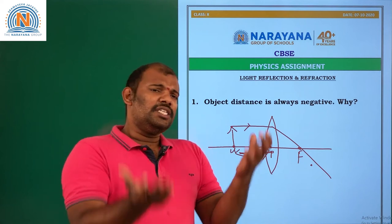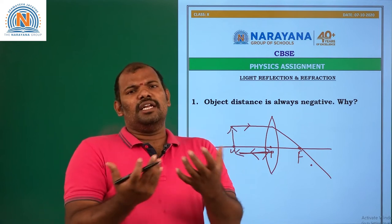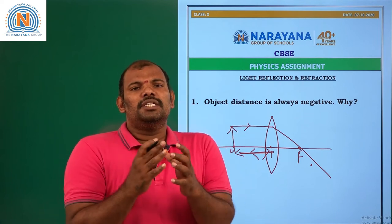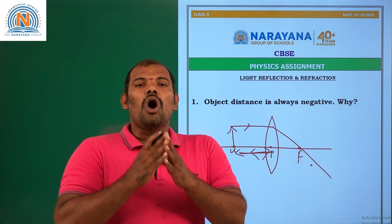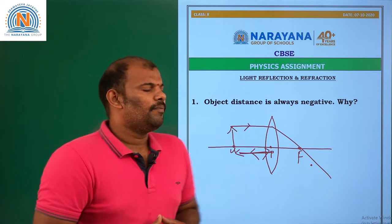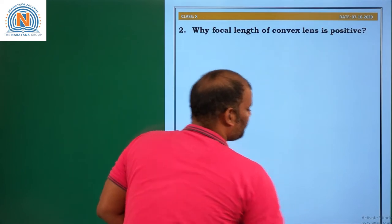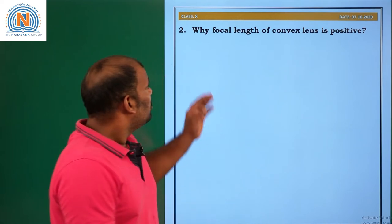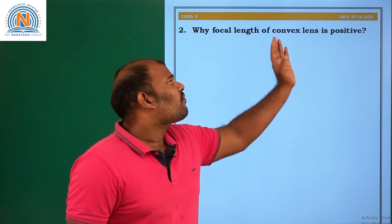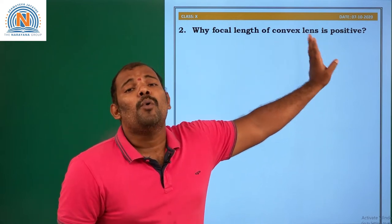Whether it is a mirror or a lens, object distance is always negative. Question number 2: Why is the focal length of a convex lens positive?